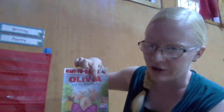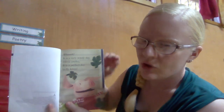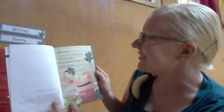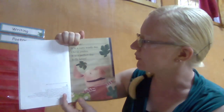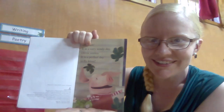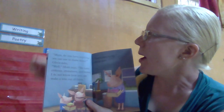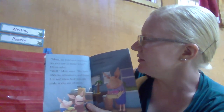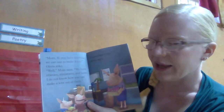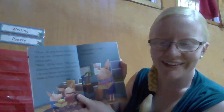Olivia and the Kite Party. Whoosh! It is a very windy day. Olivia smiles. It is a perfect day to fly kites! That exclamation mark means we read it with excitement — she says it is a perfect day to fly kites! Mom, do you have anything we can use to make kites? Olivia asks. Well, Mom says, we have ribbons, streamers, and bows. I do not know how you can make a kite out of them. Leave that to me, Olivia says.